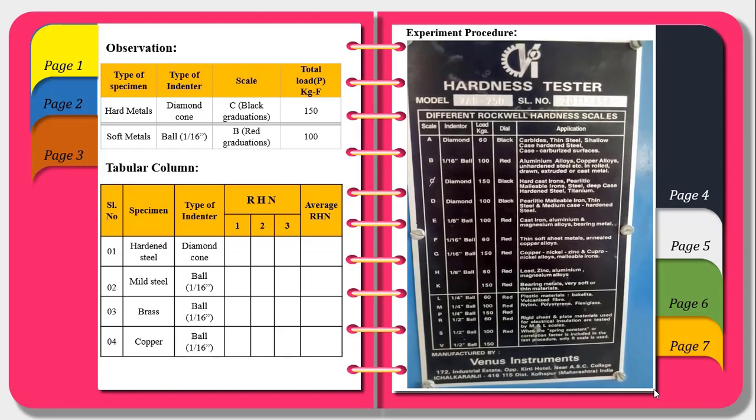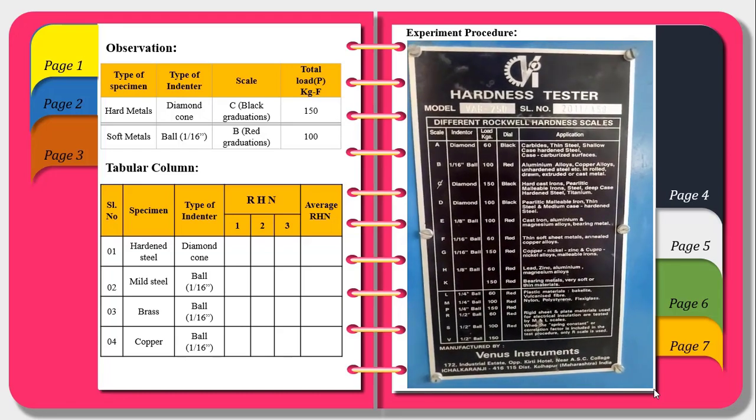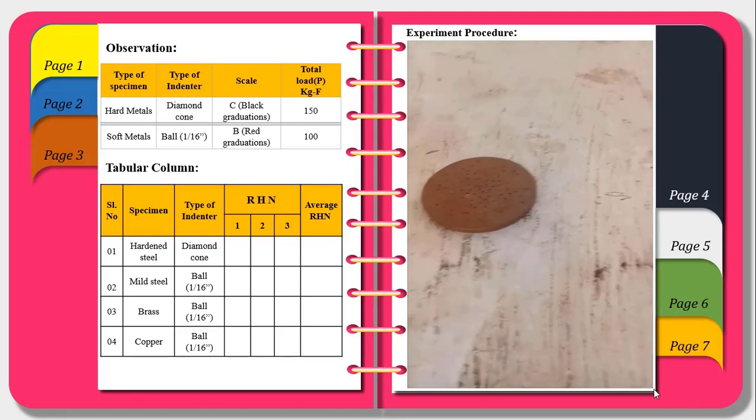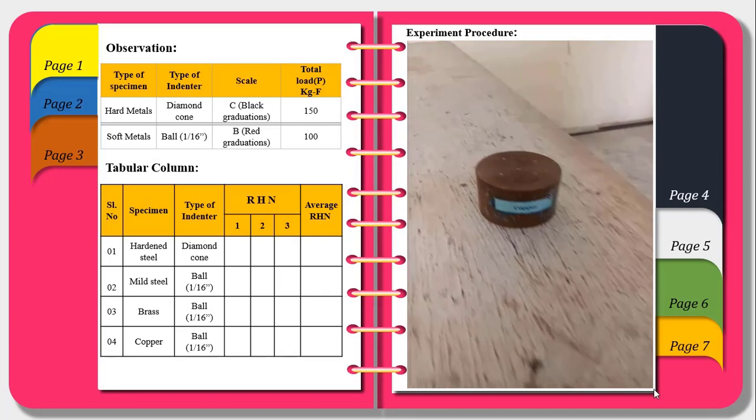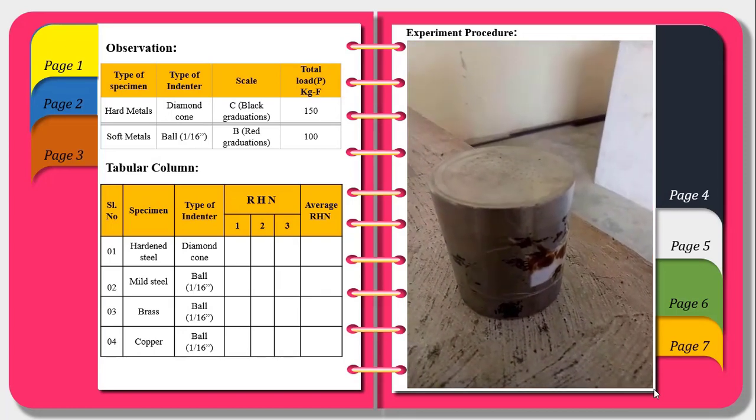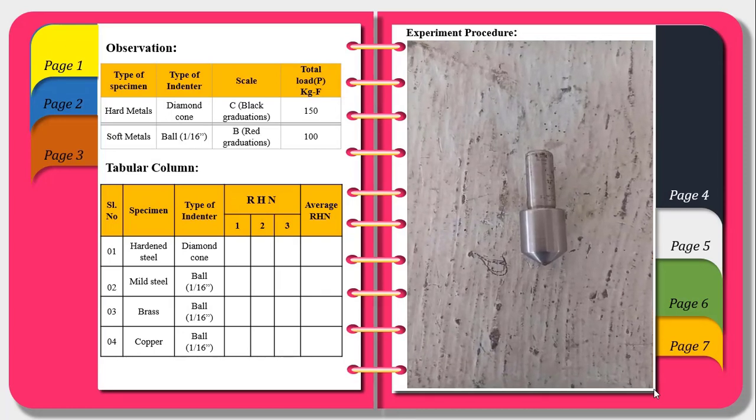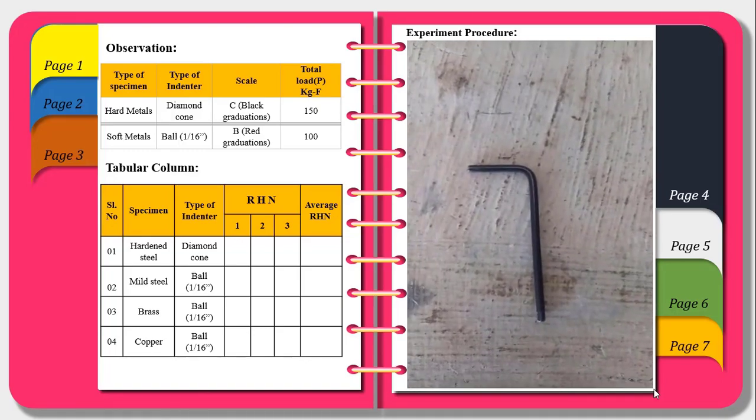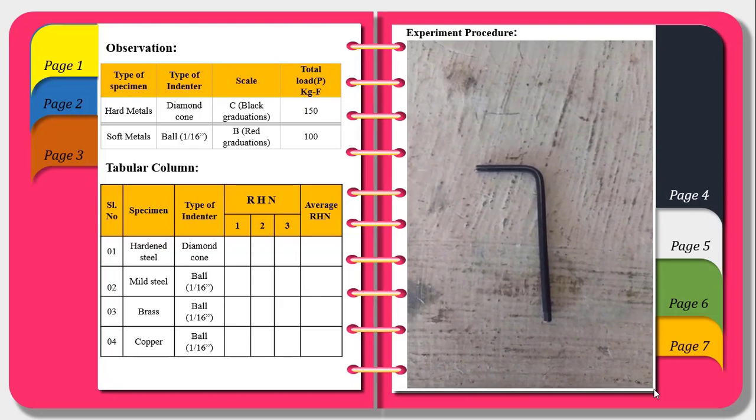Next moving on to the specimens used for experimentations. This is mild steel specimen, brass and this is copper specimen. This is hardened steel specimen. The indenters used are diamond cone indenter and 1/16th ball indenter. And this is the Allen key used to mount.